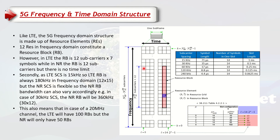When we assign resources to a user, we cannot assign a single resource element because it carries too little data. So the smallest allocation is called a resource block. A resource block is a group of 12 subcarriers. In LTE, a resource block was 12 subcarriers by 7 symbols, but in 5G there is no limitation on the time domain symbols — a resource block is 12 subcarriers and can be 7 or 14 symbols, making it more flexible.